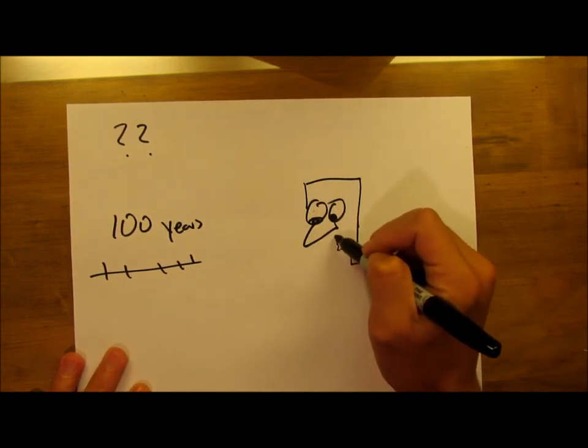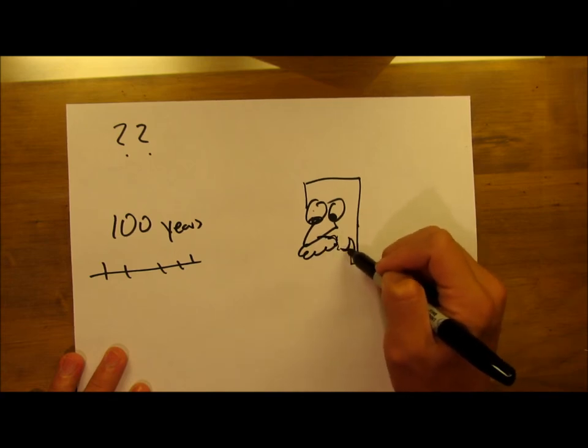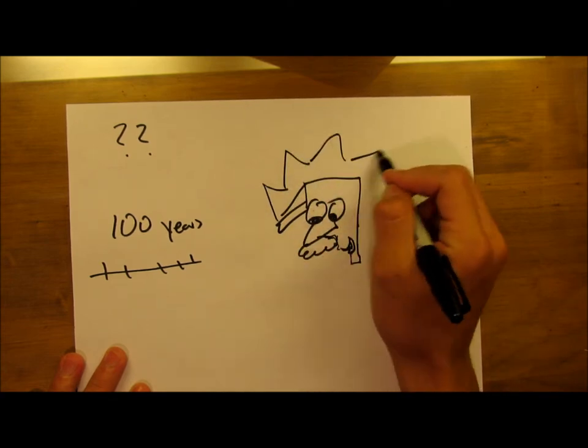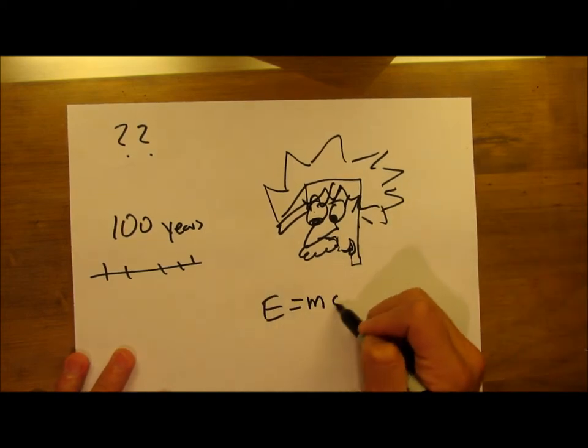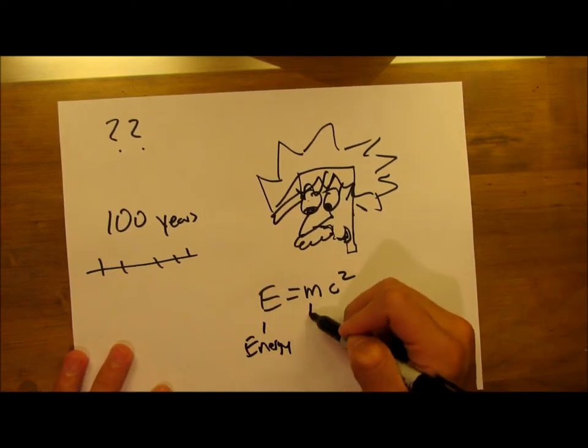About 100 years ago, Albert Einstein created the equation E equals mc squared, E standing for energy, M for mass, and C as the constant speed of light, or 3 times 10 to the 8th.